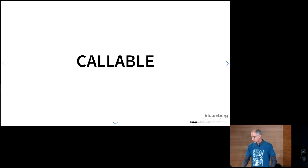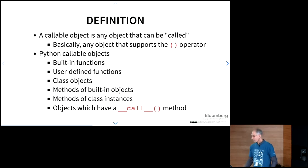So with that, let's move on to callable. The definition of a callable is any object that can be called. So a little bit of a recursive definition there. But basically, it's any object that supports the paren operator, which is to say it can be called like a function. Python callable objects that you might be familiar with are any of the built-in functions. Any function that you write yourself is a callable. The class objects that you define are callables. Methods on built-in objects and methods of your classes that you define, all of those are callable.